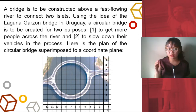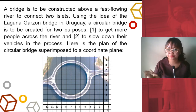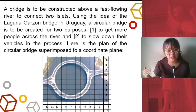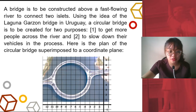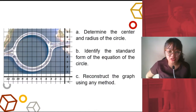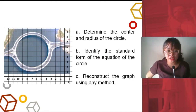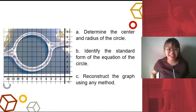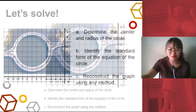So this is the graph — it's the plan of the circle placed in a coordinate plane, superimposed. Now let's see the questions. Letter A: Determine the center and radius of the circle. Letter B: Identify the standard form of the equation of the circle. Letter C: Reconstruct the graph using any method. Okay, so let's solve.